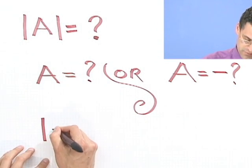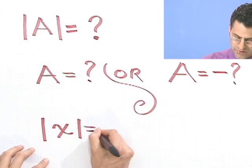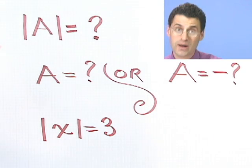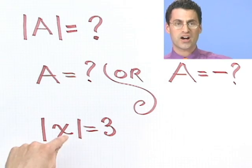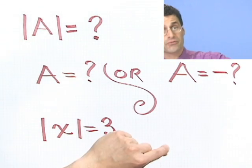Suppose I tell you absolute value of x equals 3. What's the answer? Well, there are two answers. Do you see it? x equals either 3, or negative 3.